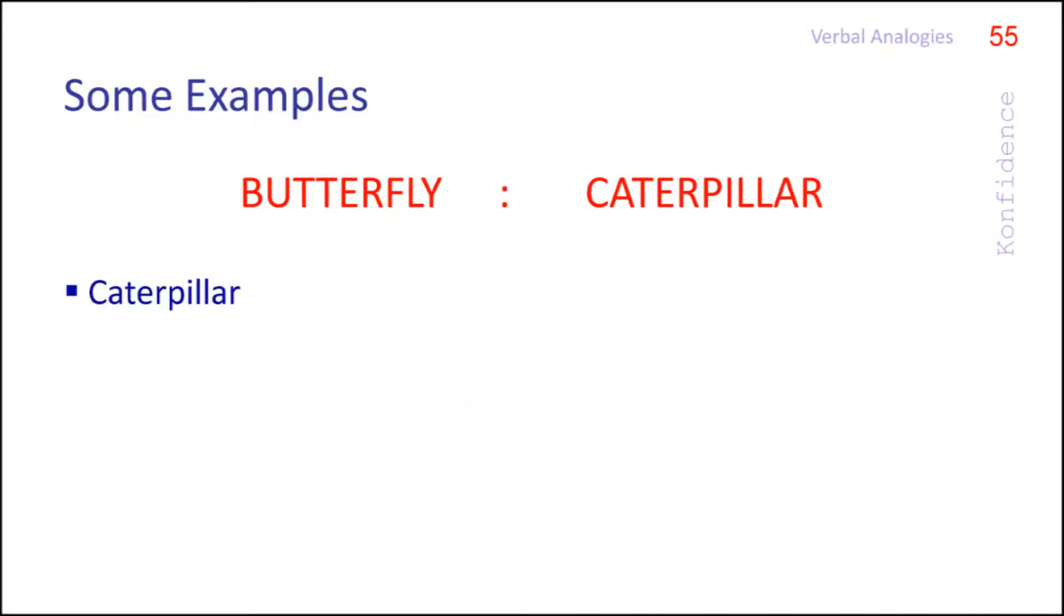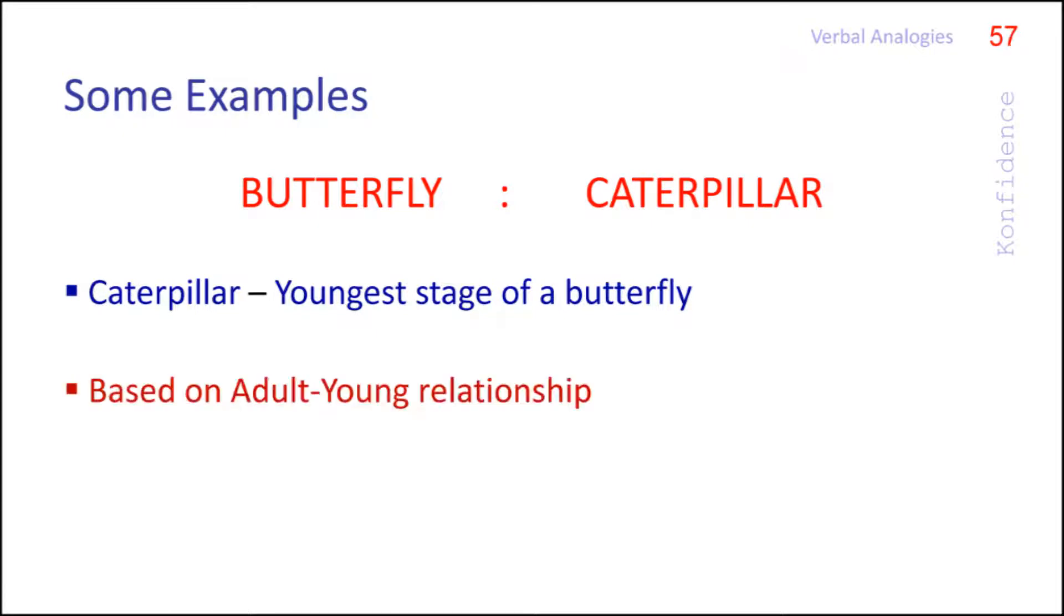And finally caterpillar is the youngest stage of a butterfly. All living things have young and adult stages and these stages are known by different names. Hence analogy questions can be based on adult young relationship.